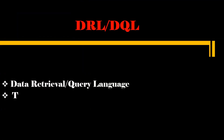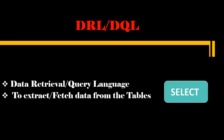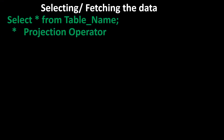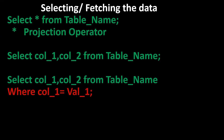Next is DRL, data retrieval or query language, used to extract or fetch data from a particular table using the select statement. This is the syntax to query and fetch data from a table. The star (*) is called the projection operator — it projects all columns in the table. If you want specific columns, you need to mention the specific column names. If you want to filter by a condition, we use the WHERE clause.